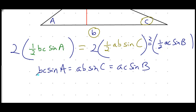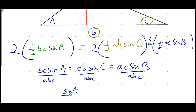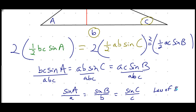Dividing everything by ABC leads to what we call the Law of Sines: sine of A over side a equals sine of B over side b equals sine of C over side c. We use this identity to help solve for various triangles.